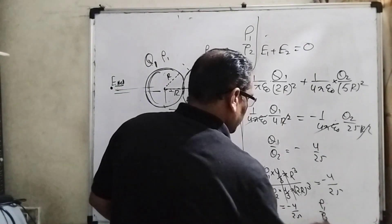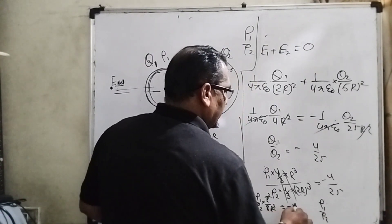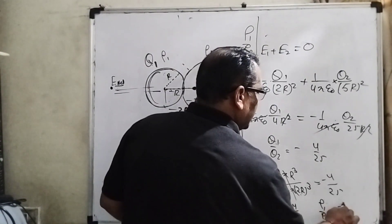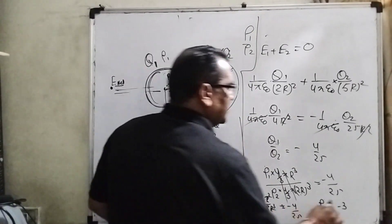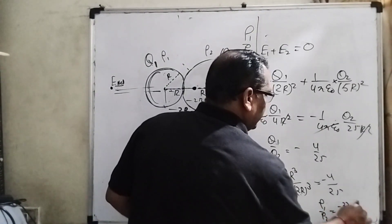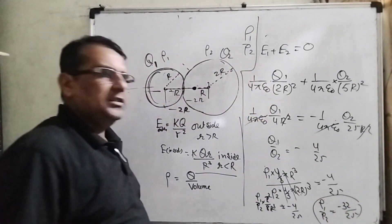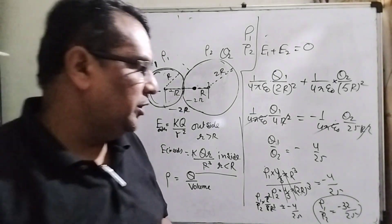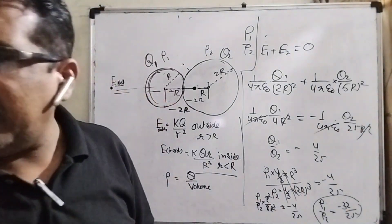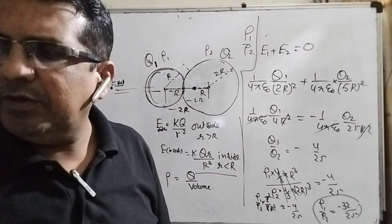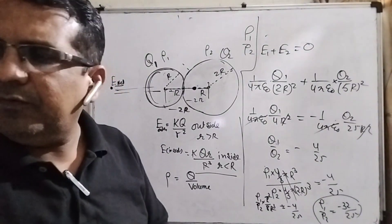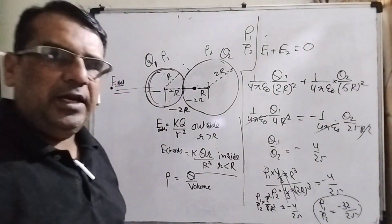Then rho 1 upon rho 2, this 8 goes to the numerator of right side, becomes minus 4 into 8 means 32 by 25. So now this answer is also correct. Rho 1 upon rho 2 equal to minus 32 by 25 means the question given option B is correct. So therefore, now B and D is the correct answer. I hope you understand this question.